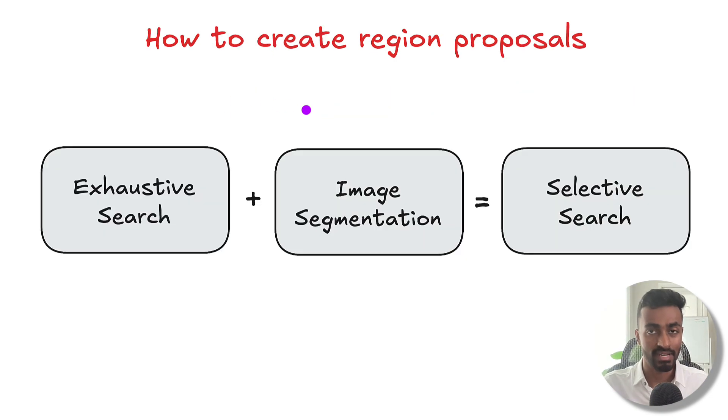Now, how we actually do this is using a technique, one of the many techniques called selective search. So selective search is a region proposal technique that exploits this hierarchical nature of images, and it combines the effects of exhaustive search along with image segmentation to come up with region proposals efficiently.